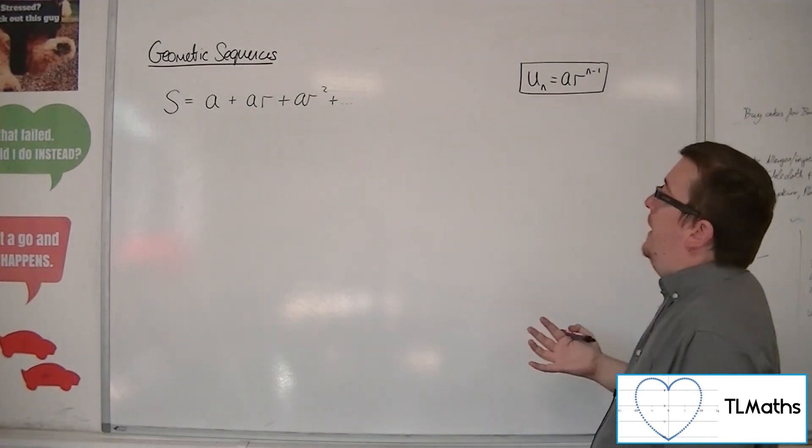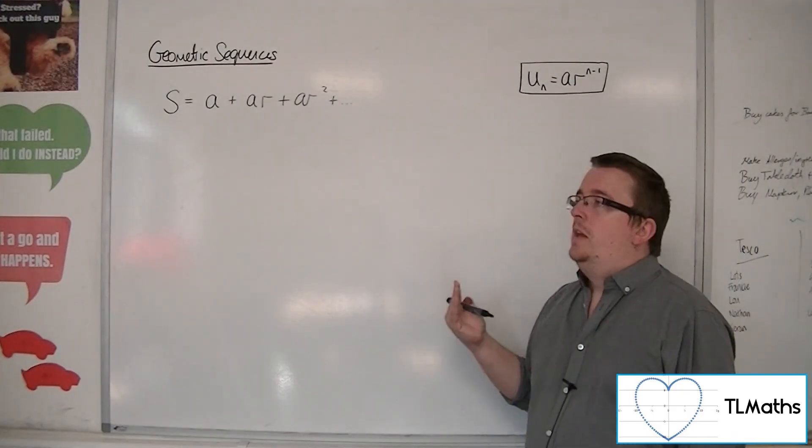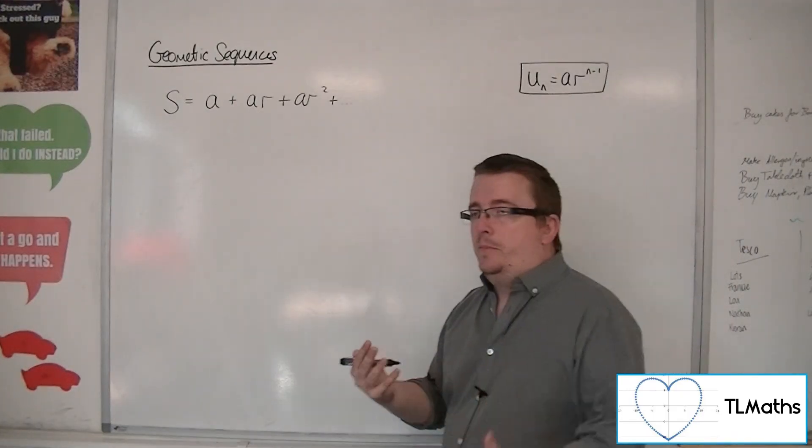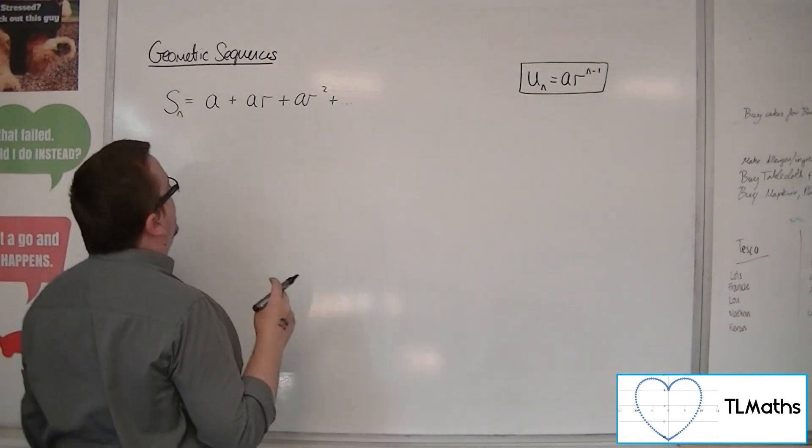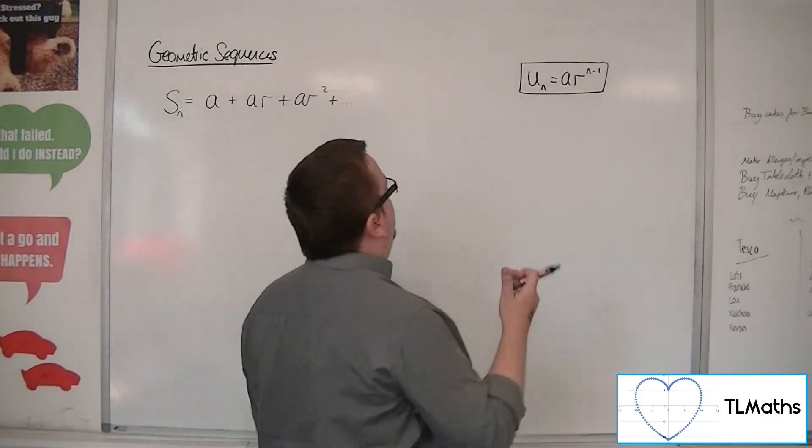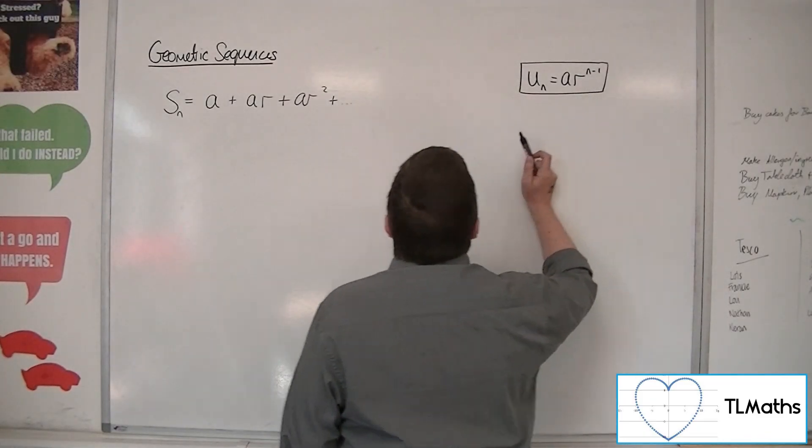Ultimately, we're going to get to the point where we get to the nth term in the sequence. So if I'm writing this as the sum to n terms, I'm going to get to a point where I get to the nth term ar to the n minus 1.